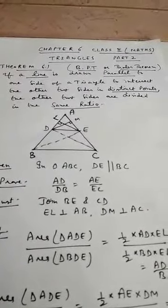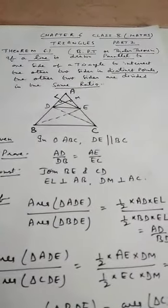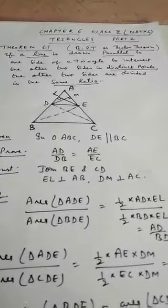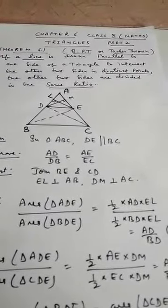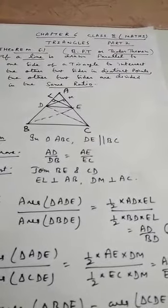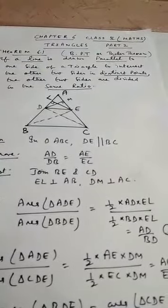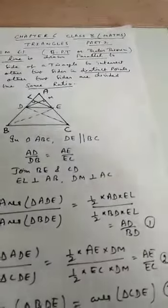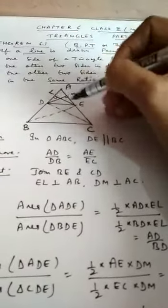Now we come to the proof of the theorem. Area of triangle ADE: if I take base as AD, then EL is the altitude. By the formula for area — half into base into height — here AD is the base and EL is the altitude.